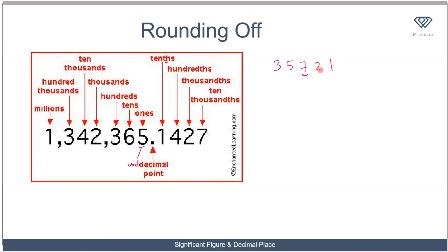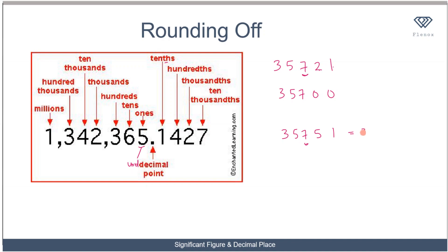Since 2 is not up to 5, I convert everything after the hundreds digit to zero, giving 35700. But if instead I have 35751 and round to the nearest hundred, the hundreds digit is 7 and the next digit is 5. Since it is 5 or above, I round up by increasing 7 by one and changing the rest to zero, giving 35800.